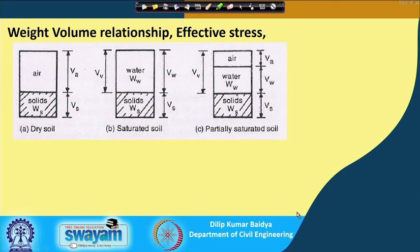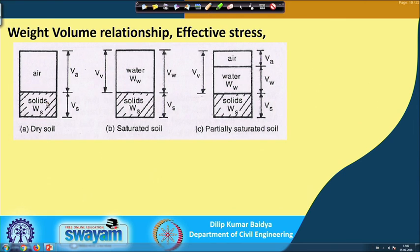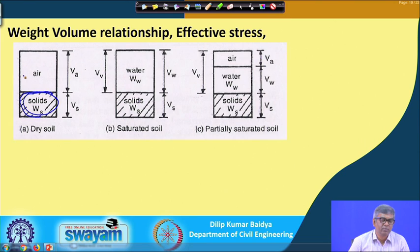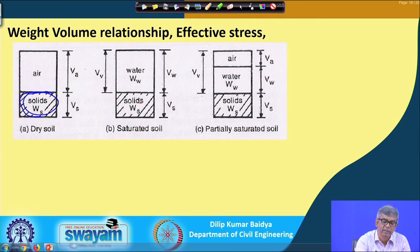Let me go to the first slide: weight-volume relationship. When a soil mass is idealized as a dry soil mass, you can idealize all the solid parts together. If I idealize the solid part and put it together, this is the volume of solid, and this is the air. When it's a dry soil there will be 2 phases — only air and solid. When this air is fully filled up by water only, then it will become saturated soil, which is still a 2-phase diagram: solid and water.